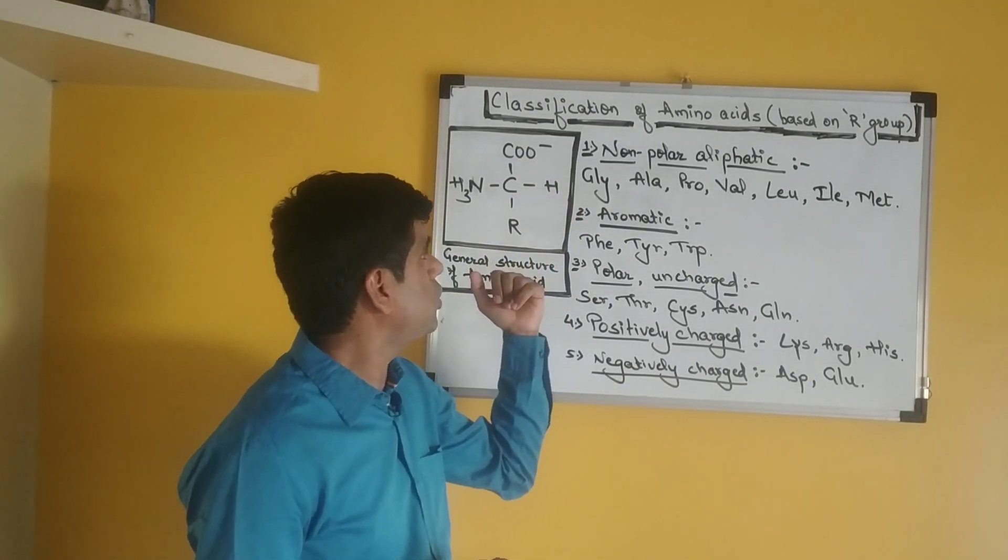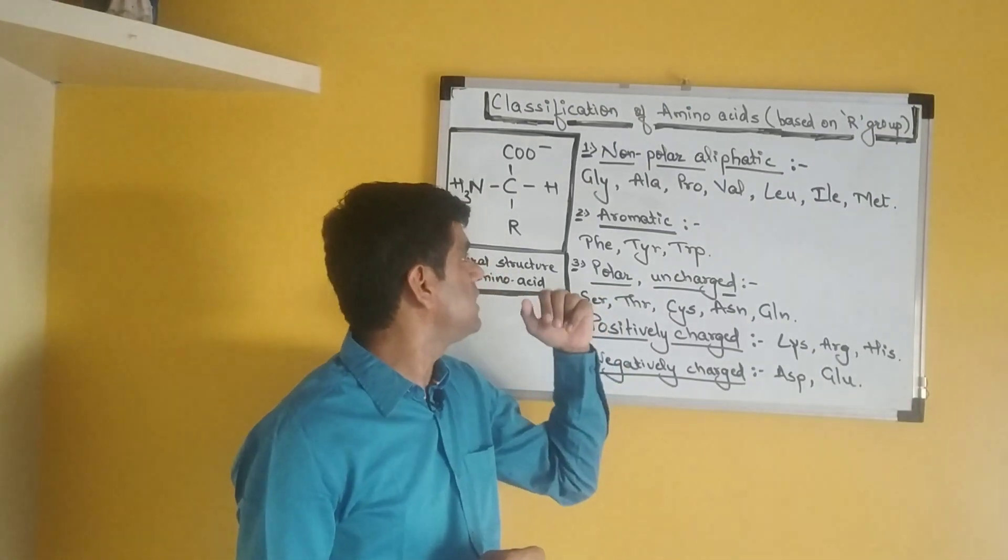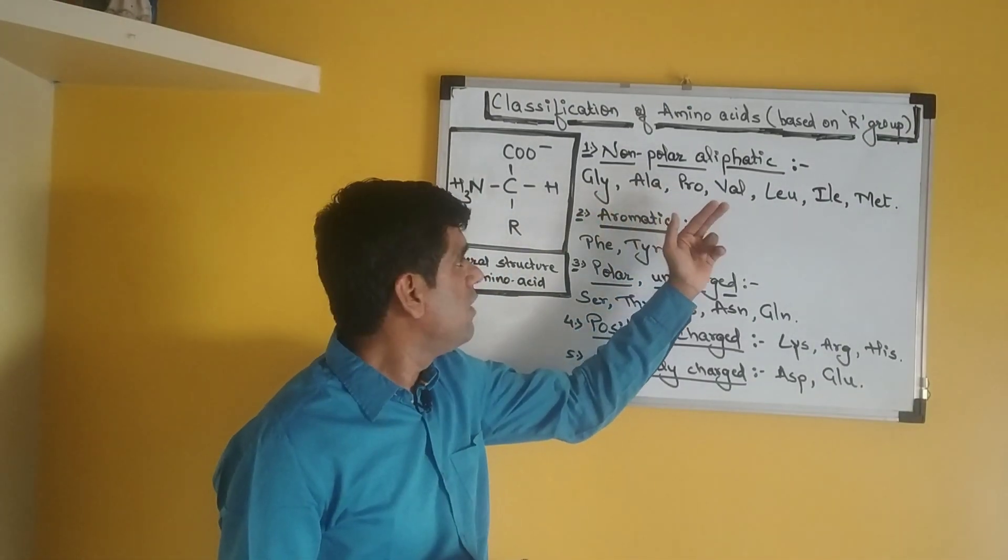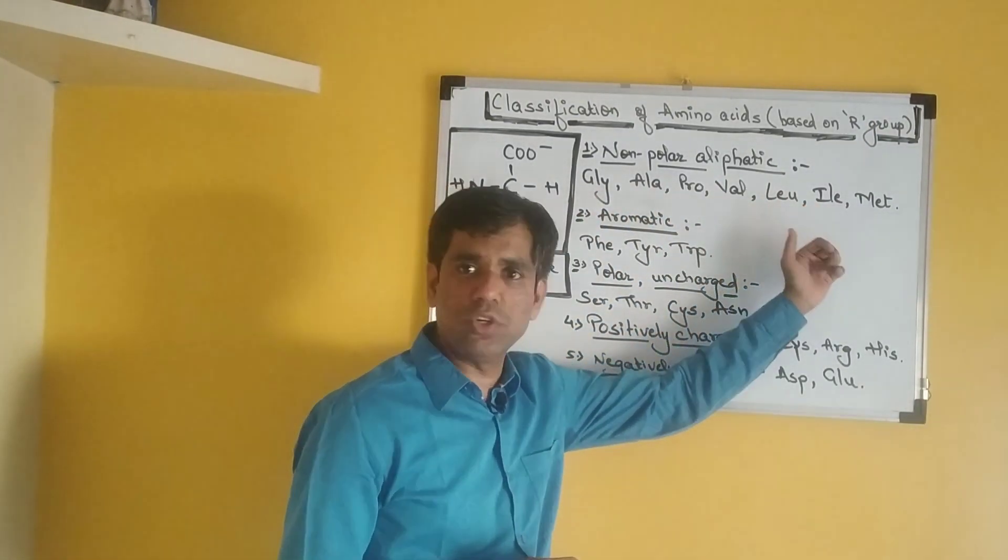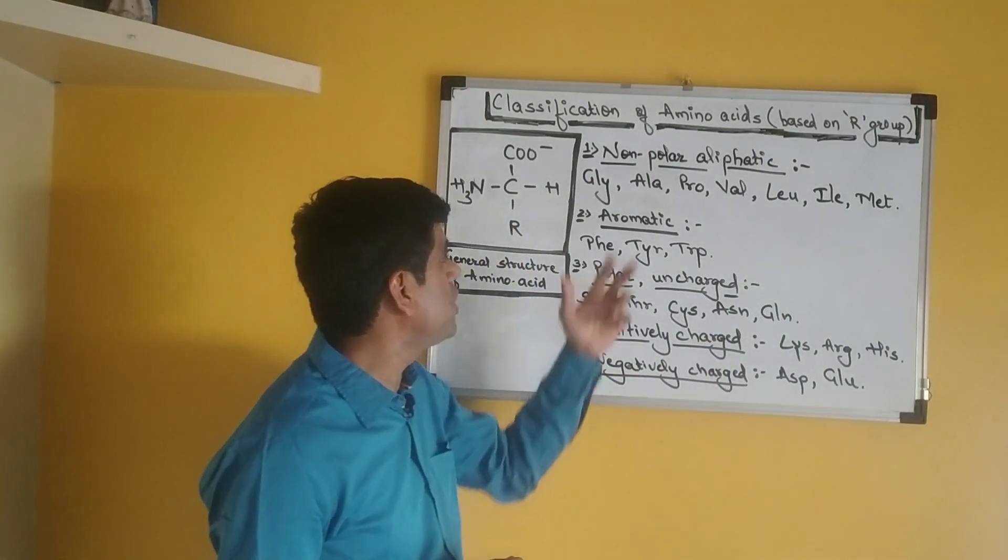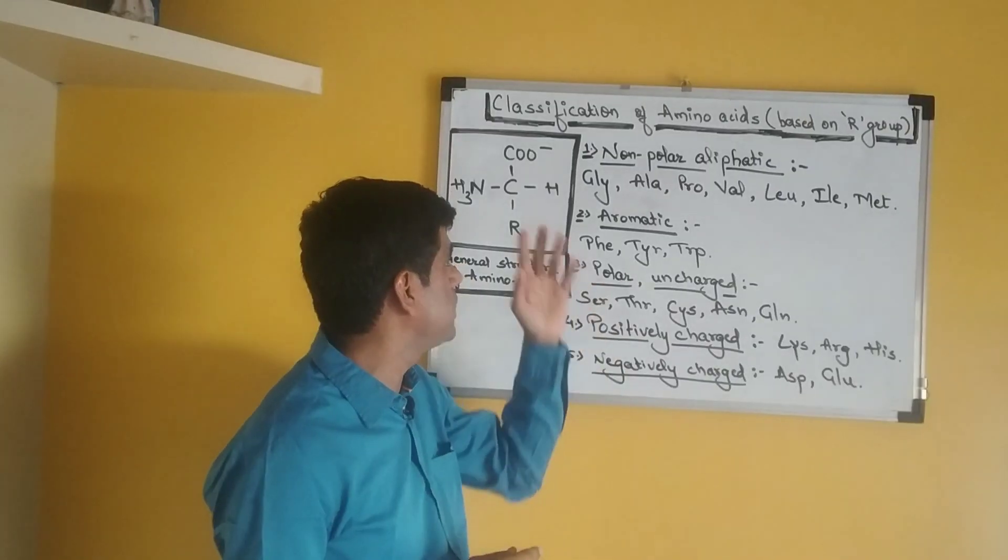The others in the list of this non-polar aliphatic amino acid are alanine, proline, valine, leucine, isoleucine, and methionine. They contribute to the hydrophobic interactions, being non-polar.